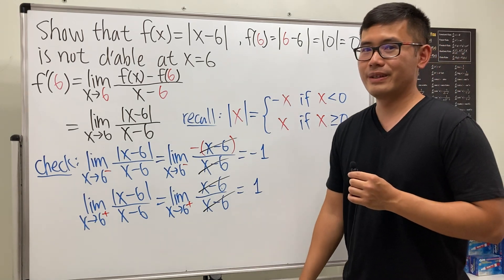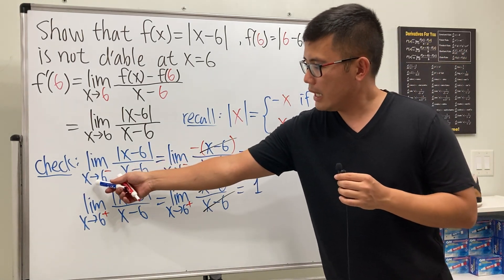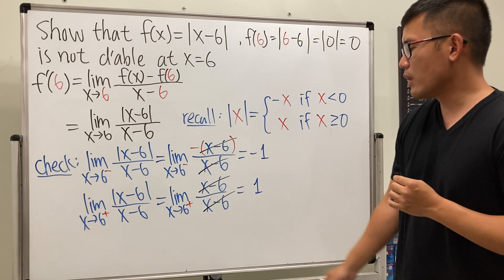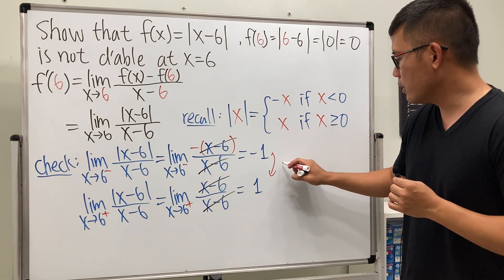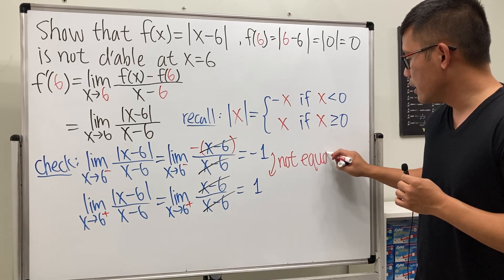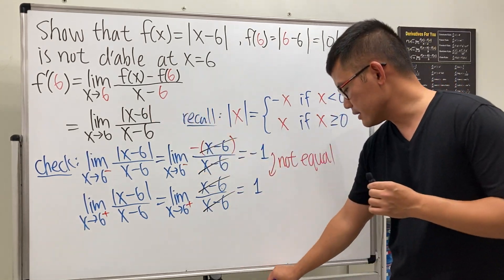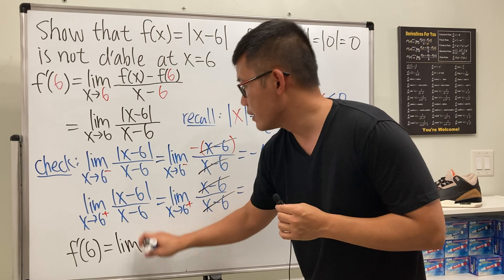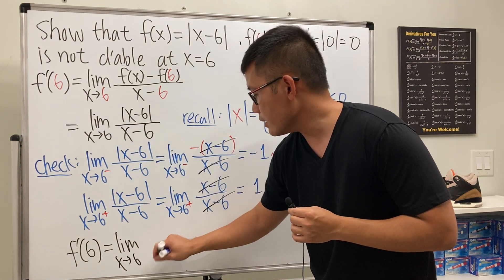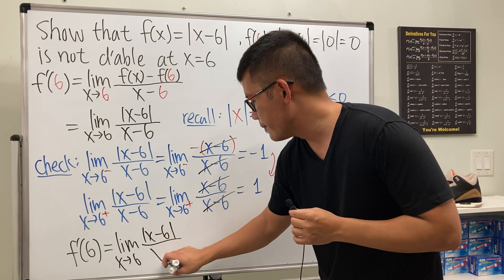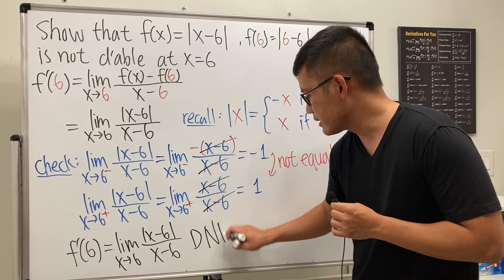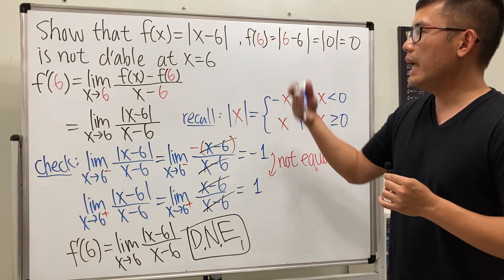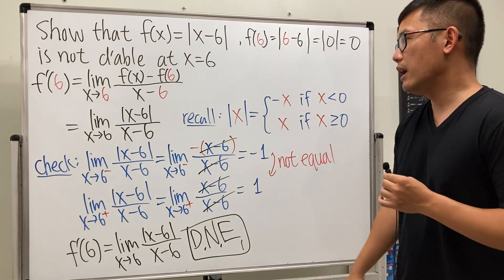Cancel the terms and we end up with positive 1. So the conclusion is: approaching 6 from the left gives negative 1, approaching 6 from the right gives positive 1. They are not equal, so this limit does not exist. Therefore f prime of 6, by definition, does not exist, which means f is not differentiable at x equals 6.